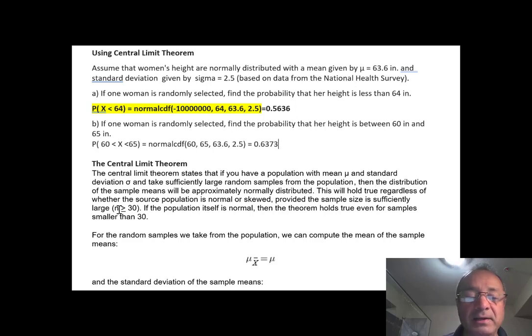This will hold true regardless of whether the source population is normal or skewed. If you have a sample of size 30 or more, and if you select thousands of samples of size 30 or more, and then you try to plot the mean of each of those samples, you're going to get a distribution that is approximately normal bell-shaped.